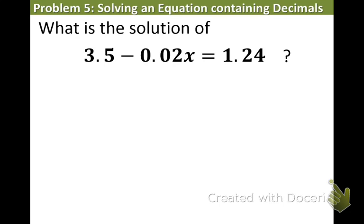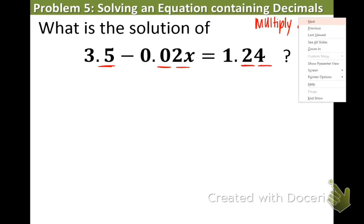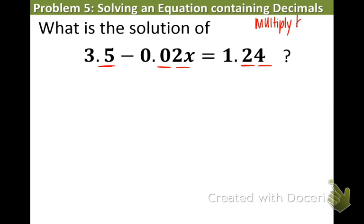So, here's our last example. We have 3.5 minus 0.02x equals 1.24. What is the greatest number of digits involved? In the first one, there is one spot. In the second one, there's two places. And in the last one, there's two places. So, the biggest or the greatest number of digits involved is 2 to the right of the decimal. We're going to multiply by 10 to the second, which is equal to 100. And remember, we have to do the exact same thing to both sides. So, let's multiply both sides by 100.